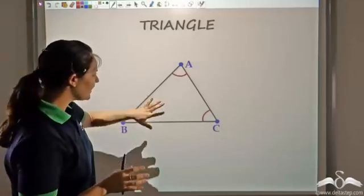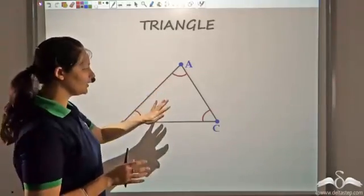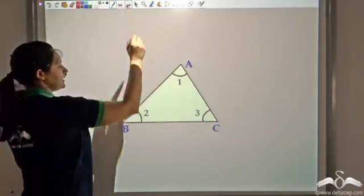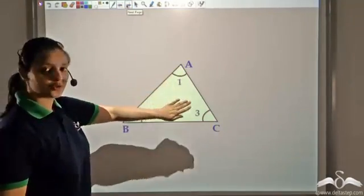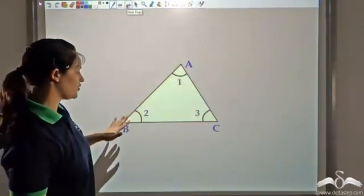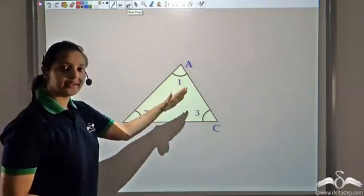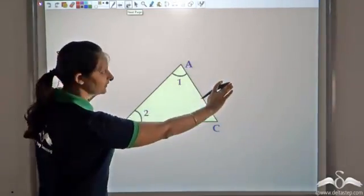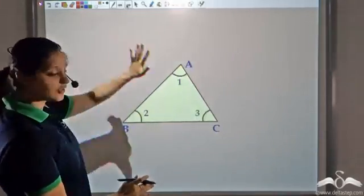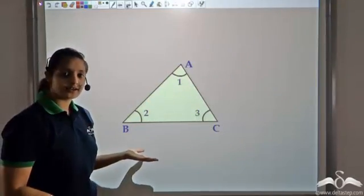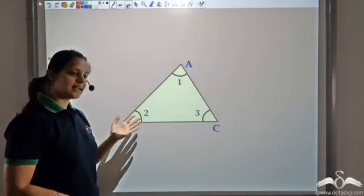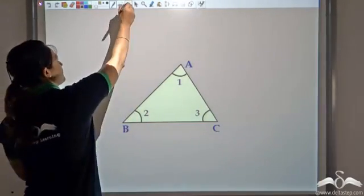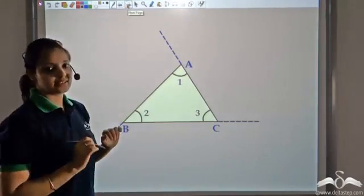Now, since a triangle has an interior, it would have an exterior too. The shaded portion is the interior of this triangle, and the three interior angles are 1, 2, and 3. Everything outside this triangle — the entire grey region — is the exterior of the triangle. Since it has interior angles, it would have exterior angles also. Let's see how we define this exterior angle.